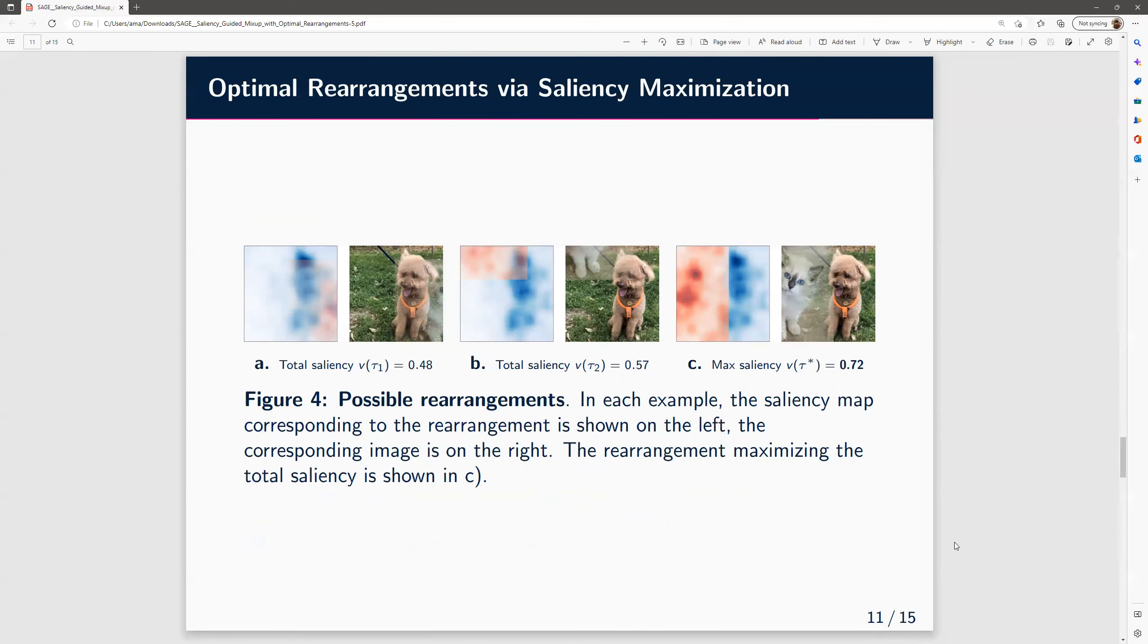Here are three examples of the results of three possible rearrangements. In each example, a saliency map corresponding to the rearrangement tau is shown on the left. The corresponding mixed result is on the right. We see that c, the rearrangement c, maximizes the total saliency, and the resulting image is the most informative.